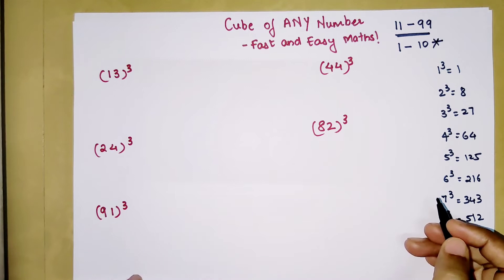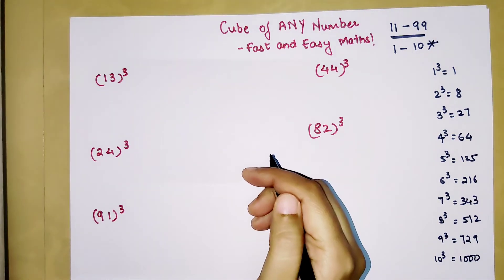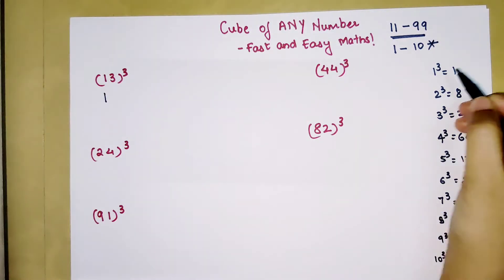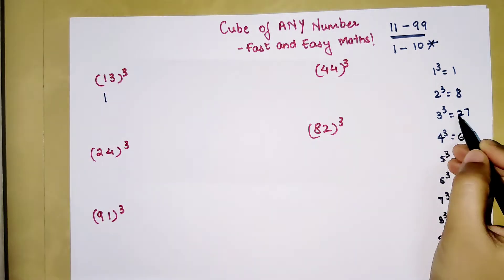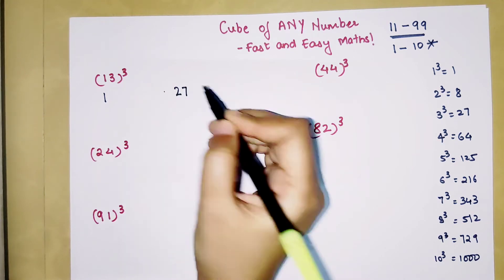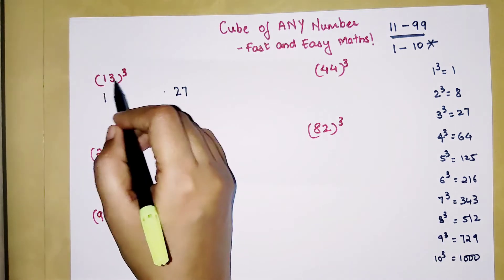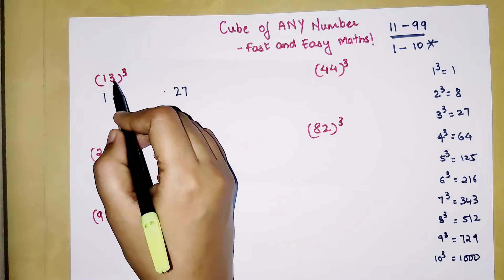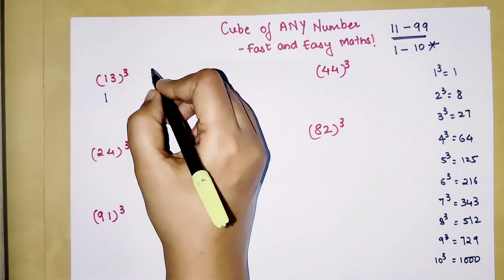So now what we will do is first we will write down cube of 1 which is 1. Then we will write down cube of 3. Cube of 3 is 27 and we will write down somewhere far. Then the next thing you need to do is multiply all the numbers given over here. So we have 1 into 3 which is 3. 3 into 3 again will get you 9.